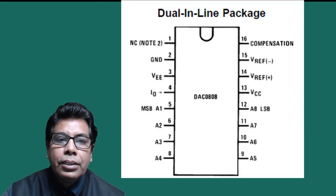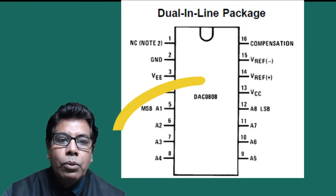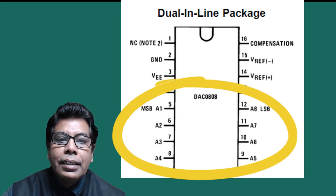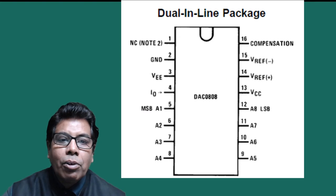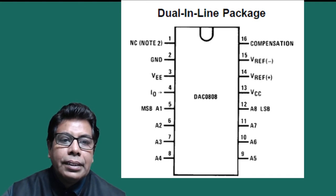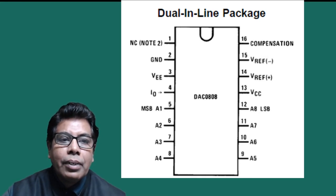Now let us go to the pin diagram. This is a dual in-line package with 16 pins. Pins 5 to 12 are the inputs, so A1 is the MSB and A8 is the LSB. As seen in the block diagram, we have pins for VCC, V reference plus, V reference minus, then compensation. On the other side we have the pins for output current IO, then VEE, and ground. Pin number 1 has no connection.